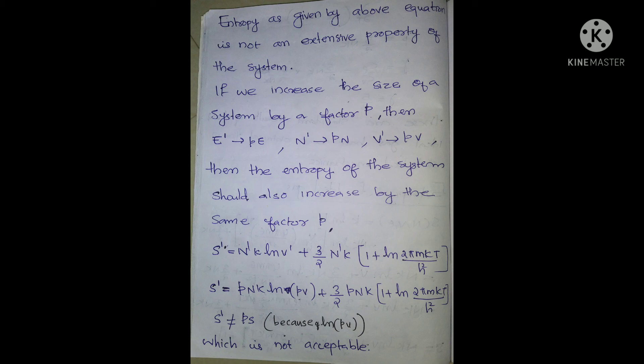The value we substitute is pN for N, pE for E, and pV for V. Now, S′ is equal to pnk log(pV) plus (3/2)pnk times [1 plus log(2πmkT / h²)].